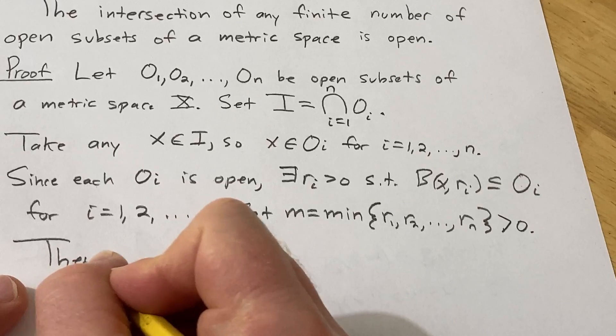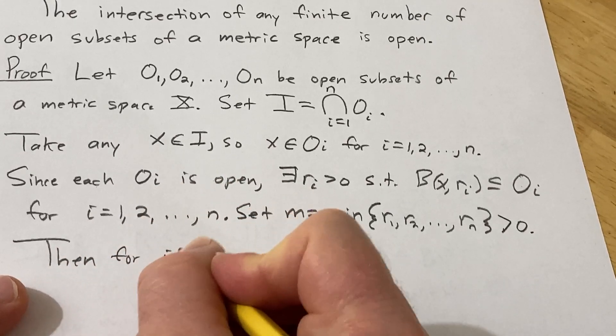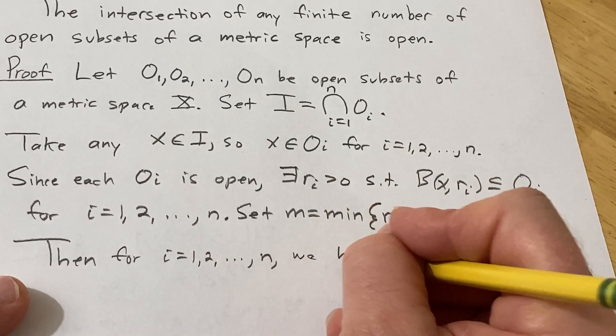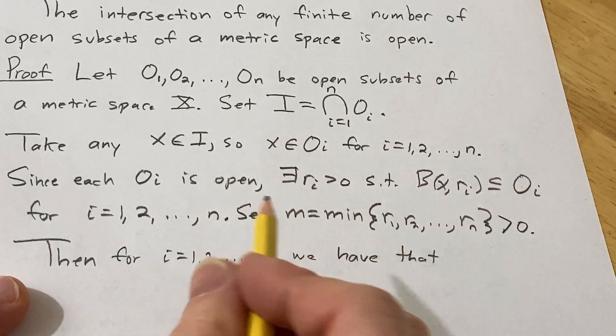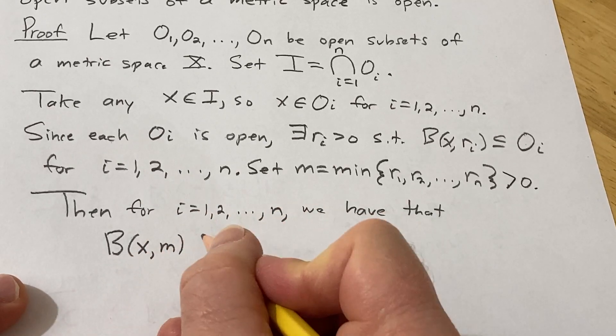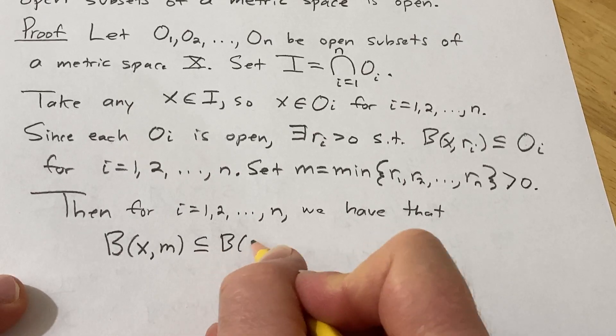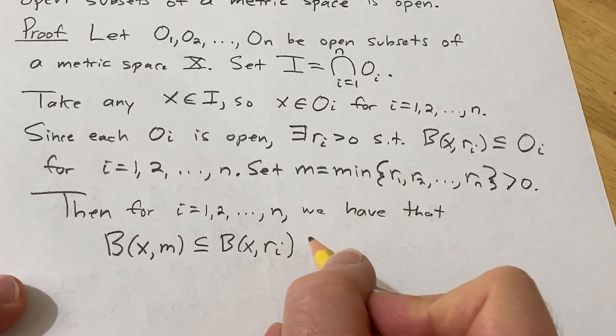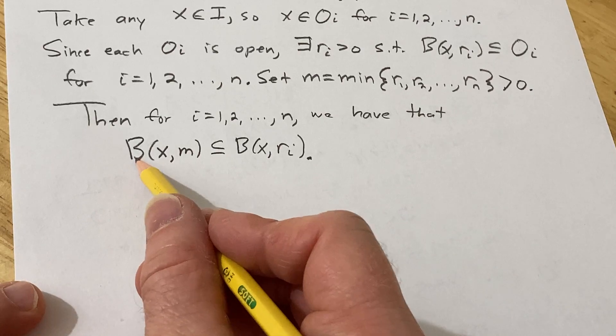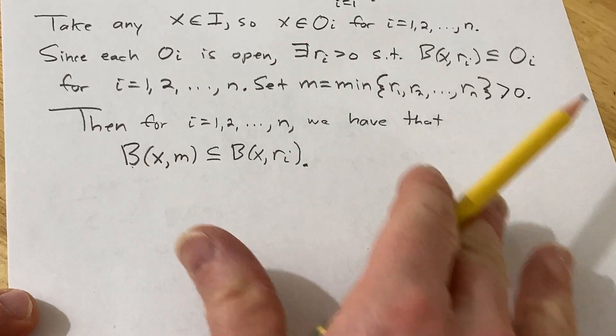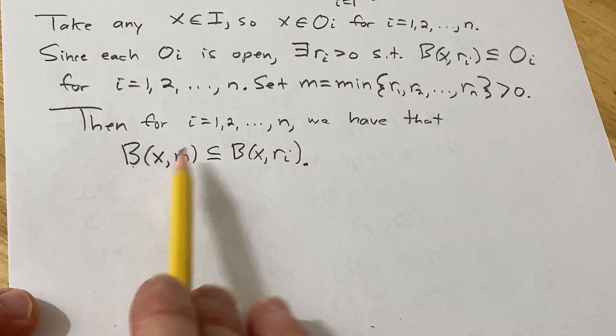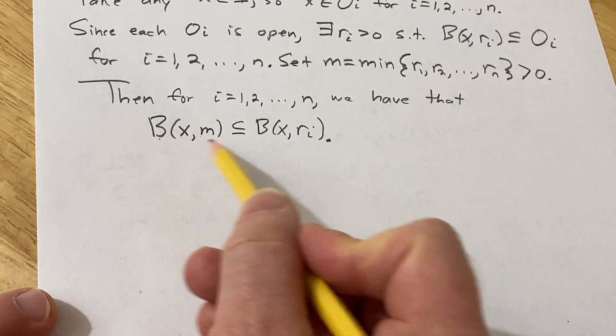So then for i equals 1, 2, ..., n we have that this open ball centered at x of radius m is contained entirely in each of these. Okay, and this statement is really obvious. Basically you have a ball of smaller radius so it's going to be contained in a ball of bigger radius and they have the same center so it's clear.